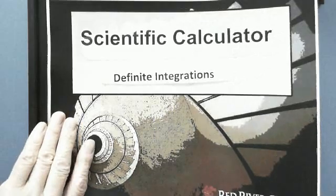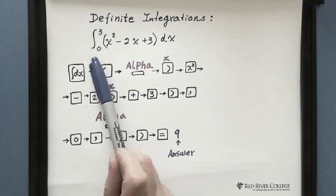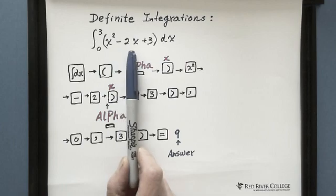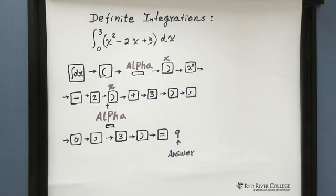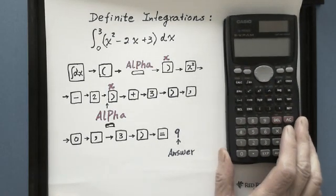I'll show you an example here. For integration, we're looking for the definite integral of x squared minus 2x plus 3. So here is the Casio fx901 calculator.